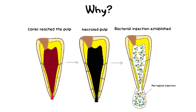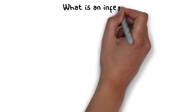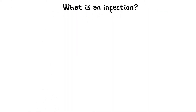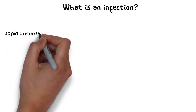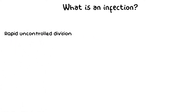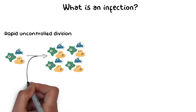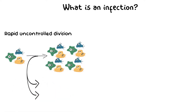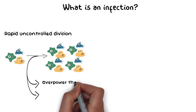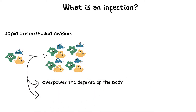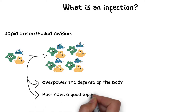Why can't they establish an infection before that? For this, you need to understand what an infection is. In simple words, infection is essentially the rapid, uncontrolled division of bacteria or any other microorganisms — for example, viruses, fungi, etc. For this to happen, the microorganism must have two important things: first, they must overpower the defenses of the body, and secondly, they must have a good supply of nutrients and other essentials required for their division.